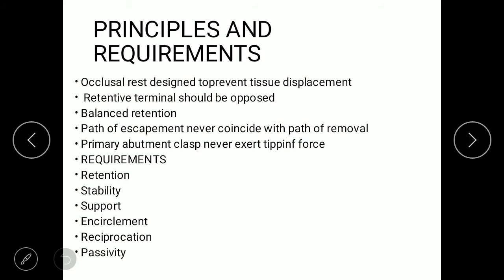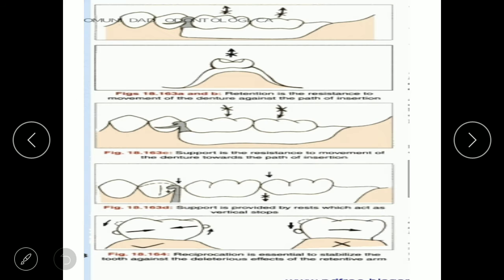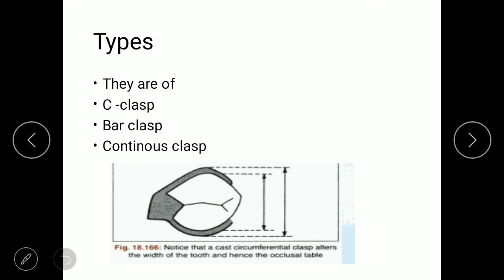There are various principles and requirements of direct retainers. Regarding principles: occlusal tissue rest should be designed to prevent tissue displacement; the retentive terminal should be opposed and balanced; retention is mainly involved; the path of escapement should never coincide with the path of removal; and the primary abutment clasp should never exceed tipping forces. Requirements include retention, stability, support, encirclement, reciprocation, and passivity.